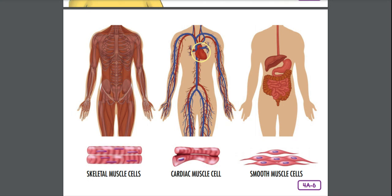First one muscle pulls, then that muscle relaxes and another muscle pulls the same bone in a different direction. Tendons attach bones to muscles. The longest and most powerful tendon in the body is the Achilles tendon. If the Achilles tendon is damaged, you would not be able to move your leg for running or jumping at all until that tendon heals, which can take a long time.